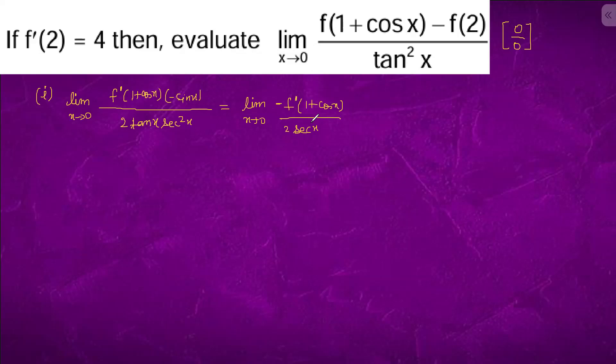This becomes sec cube x. And if we put x equals 0, it is minus f dash 2 by 2. f dash 2 is 4, so this is the answer.